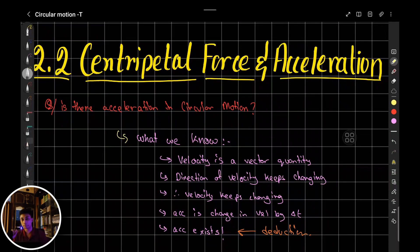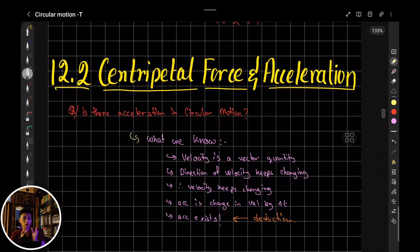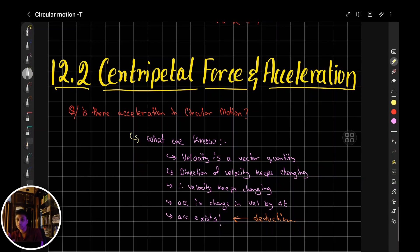The first thing we know right now is that velocity is a vector. Why is velocity a vector? Because velocity is comprised of both magnitude and direction.